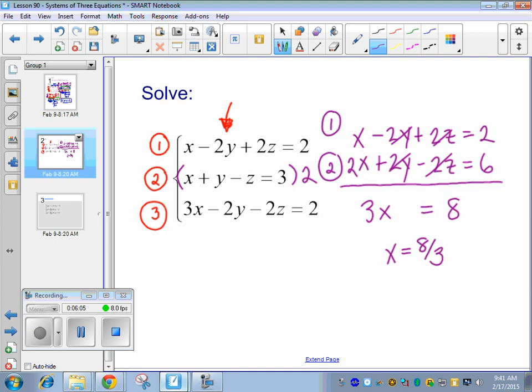So if you end up getting x, you can pretty much just plug x in and then you're down to two variables and two unknowns. So I'm going to pick these two equations here, 2 and 3, and I'm just going to plug x in as 8 thirds for both equations. So I have 8 thirds and then plus y. This is equation 2. minus z equals 3. So equation 2 before we multiply it by 2. And then I'm going to rewrite equation 3 and I'm going to plug in 8 thirds.